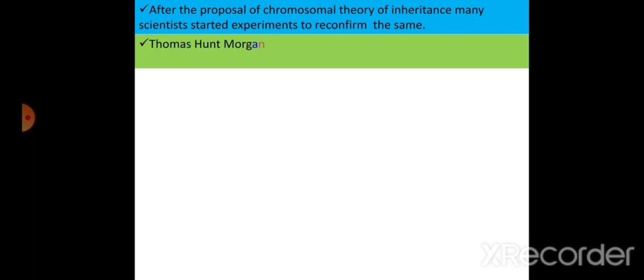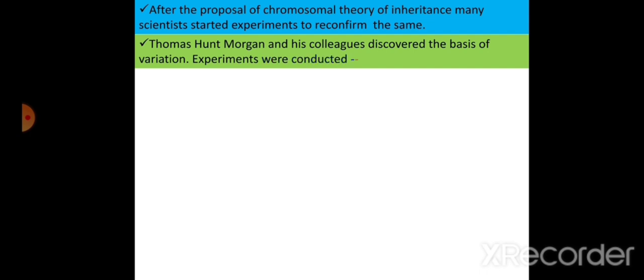many scientists started conducting different experiments to confirm the same. Amongst them, Thomas Hunt Morgan, who is said to be the father of experimental genetics, with his colleagues discovered the basis for variation. To explain variation, he conducted experiments on the organism Drosophila melanogaster.